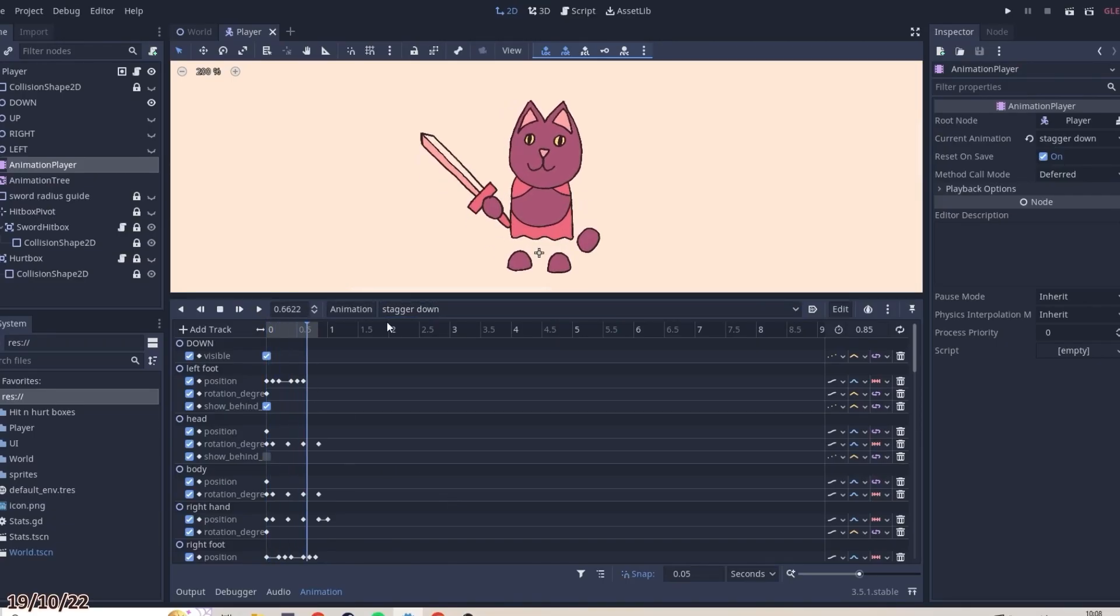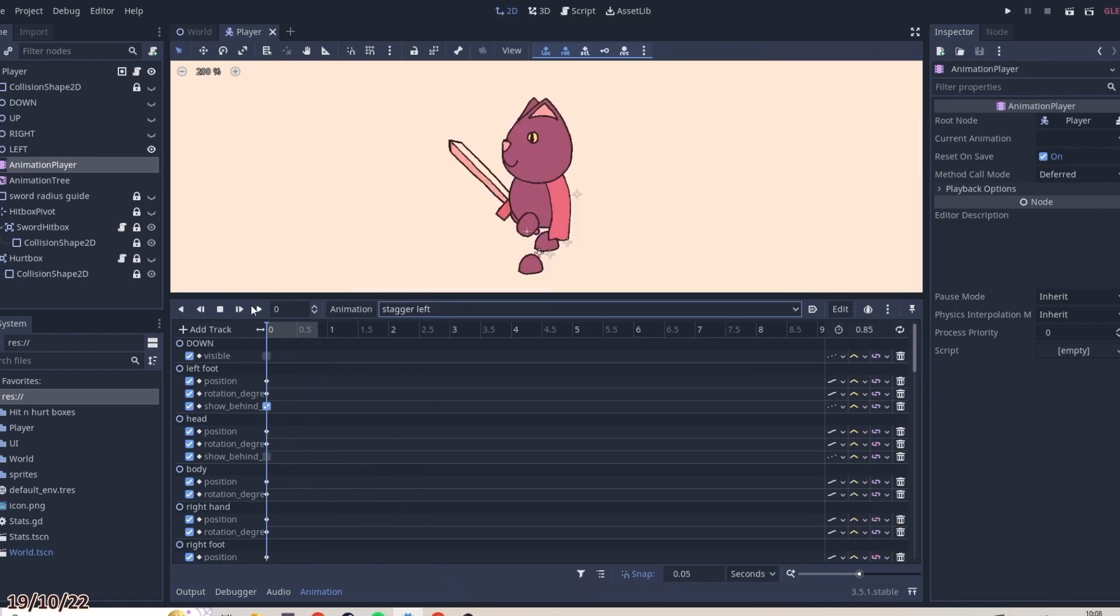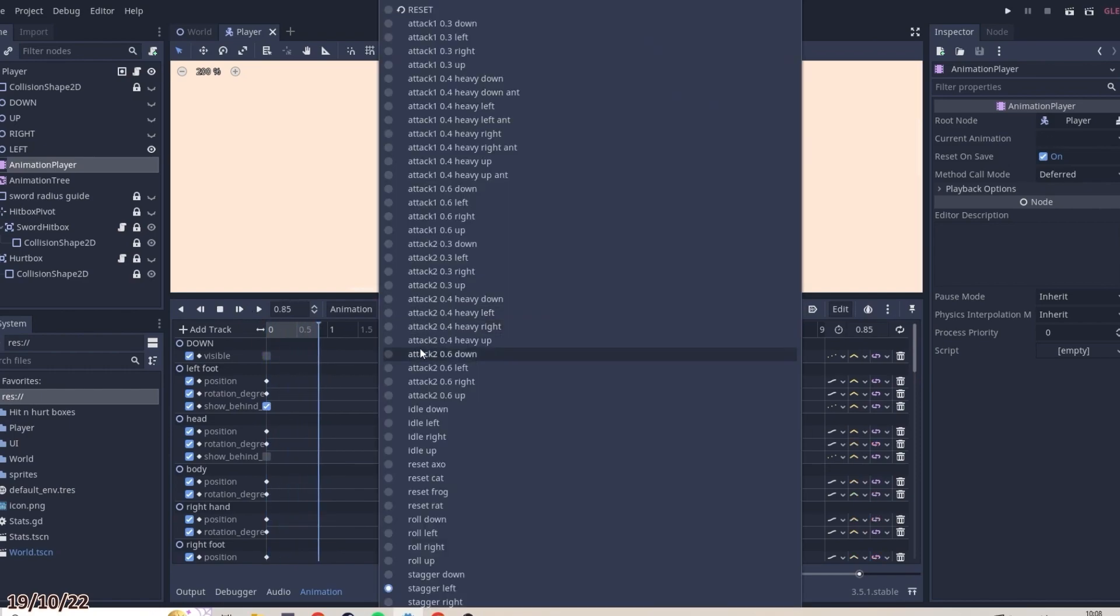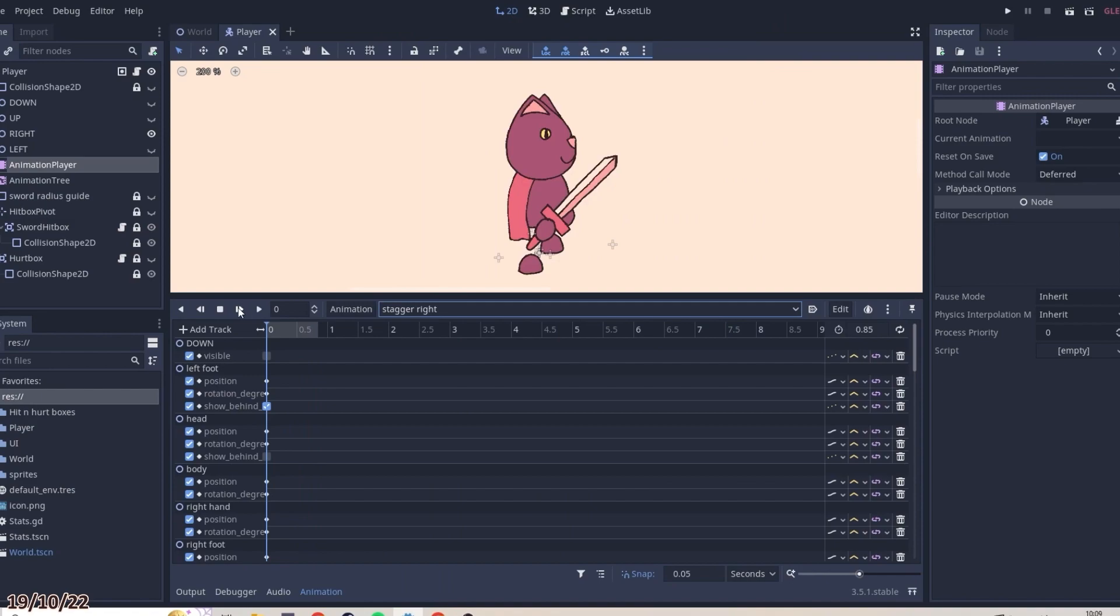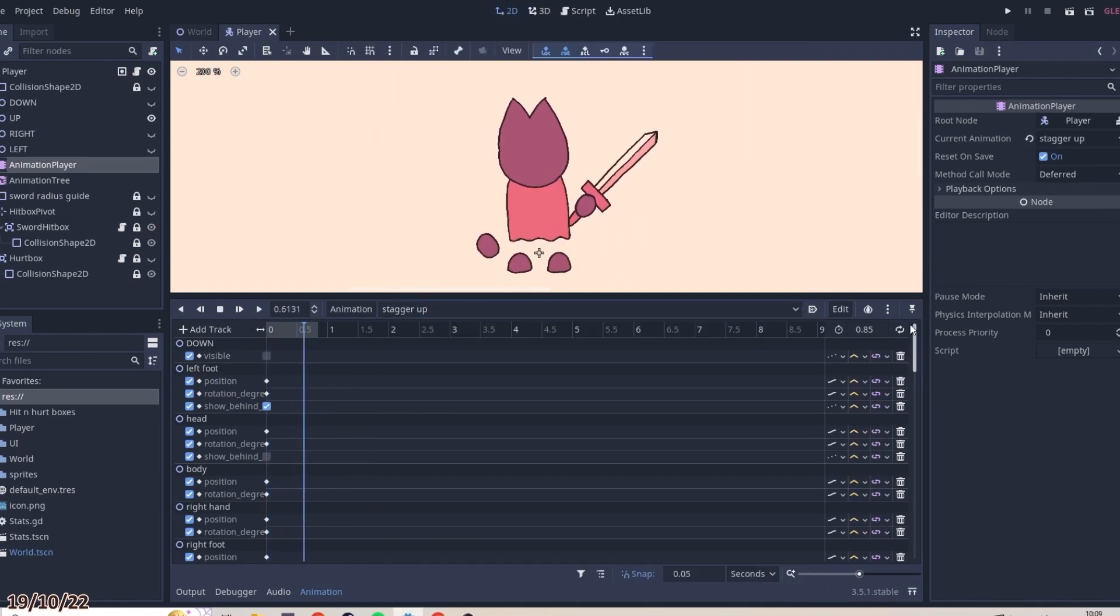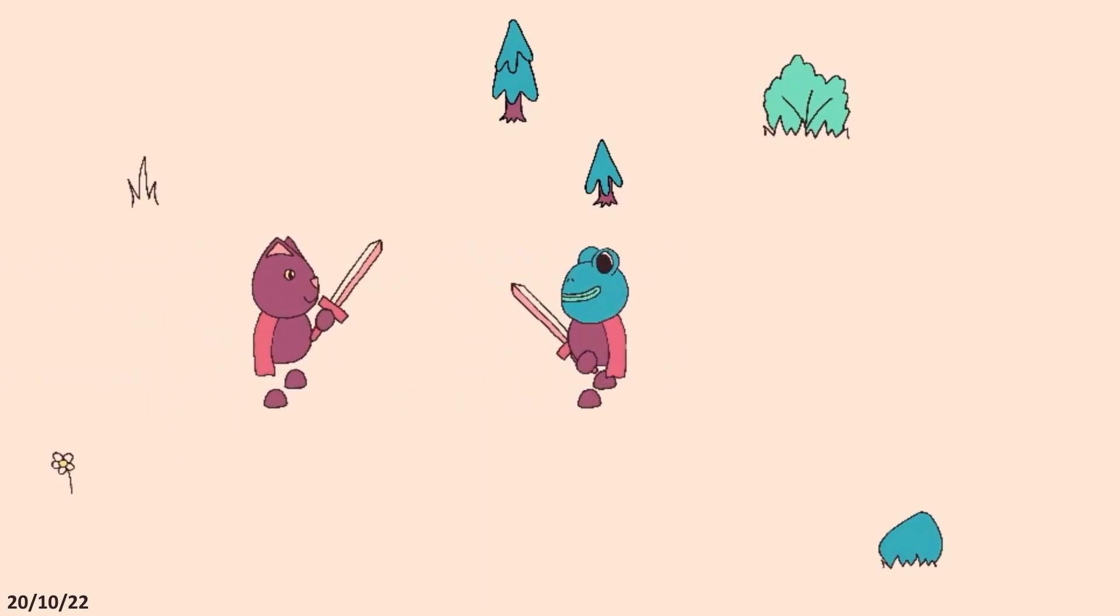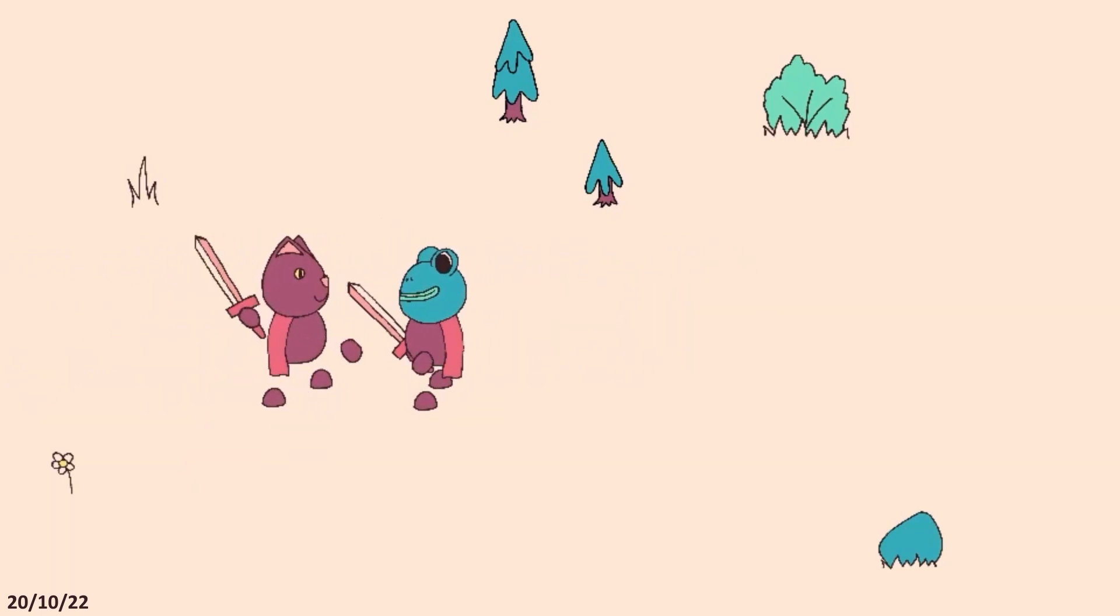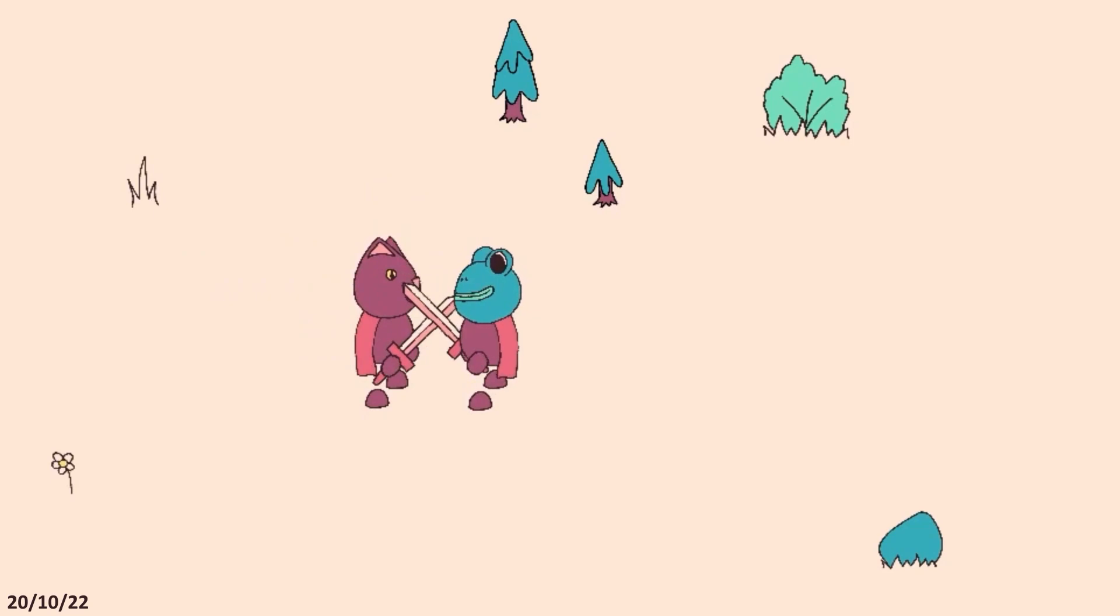Next up, I made some stagger animations, which I'm pretty happy with, despite them looking a bit like the character is having a little dance, but I think it will be clear what is happening in context. I made the player enter a staggered state whenever they take damage, and after forgetting to apply friction, I got it working fine. But I don't actually want the player to be staggered every time they take damage.